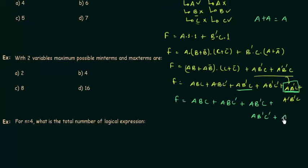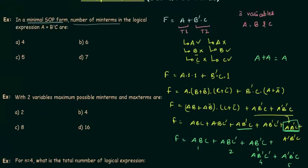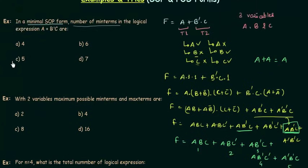Now we check if any min terms are repeated. ABC, ABC complement, AB complement C complement, and A complement B complement C are not repeated. AB complement C appears twice, so we eliminate one instance using the Boolean property A or A = A. The final canonical form is: ABC, ABC complement, AB complement C, AB complement C complement, and A complement B complement C — that gives us 5 min terms, so the answer is option C.